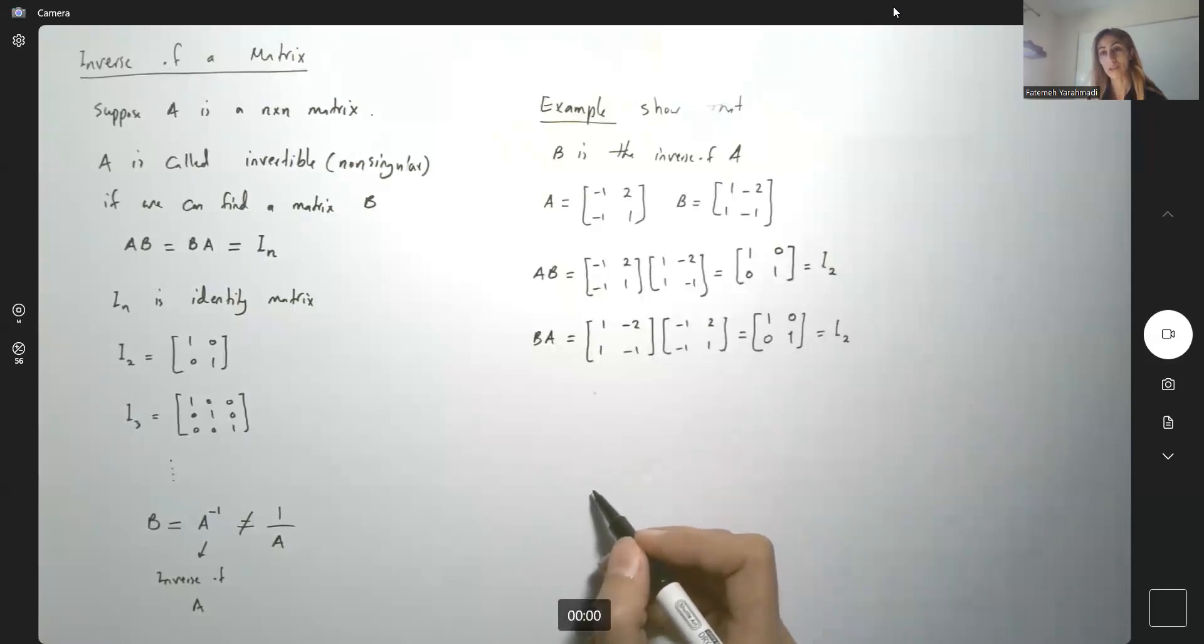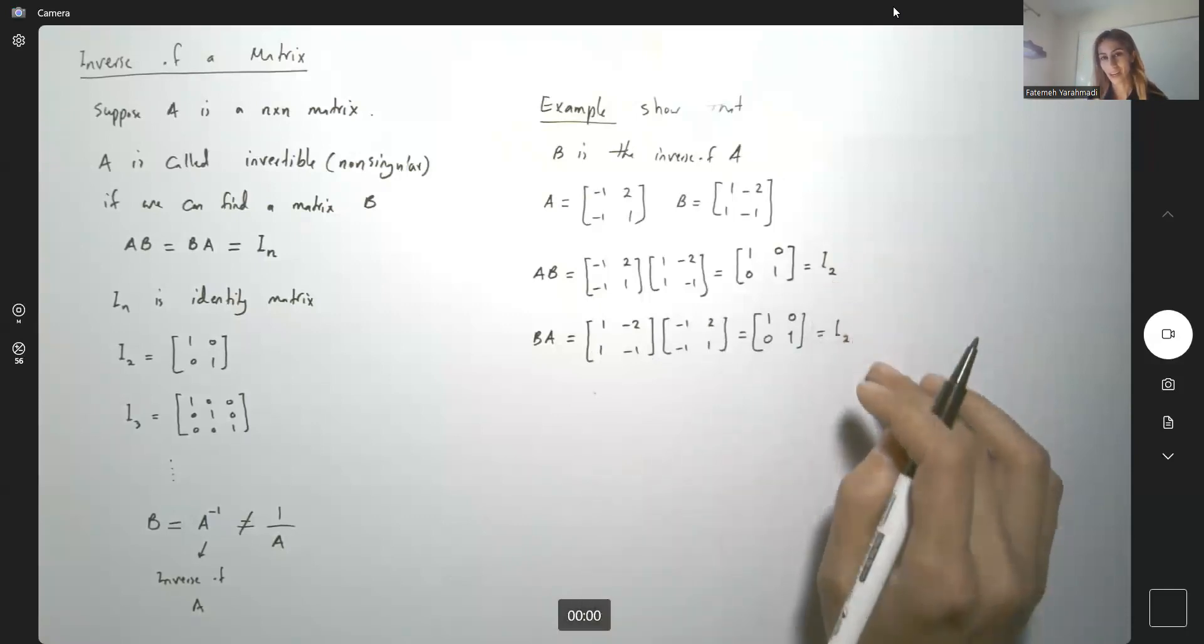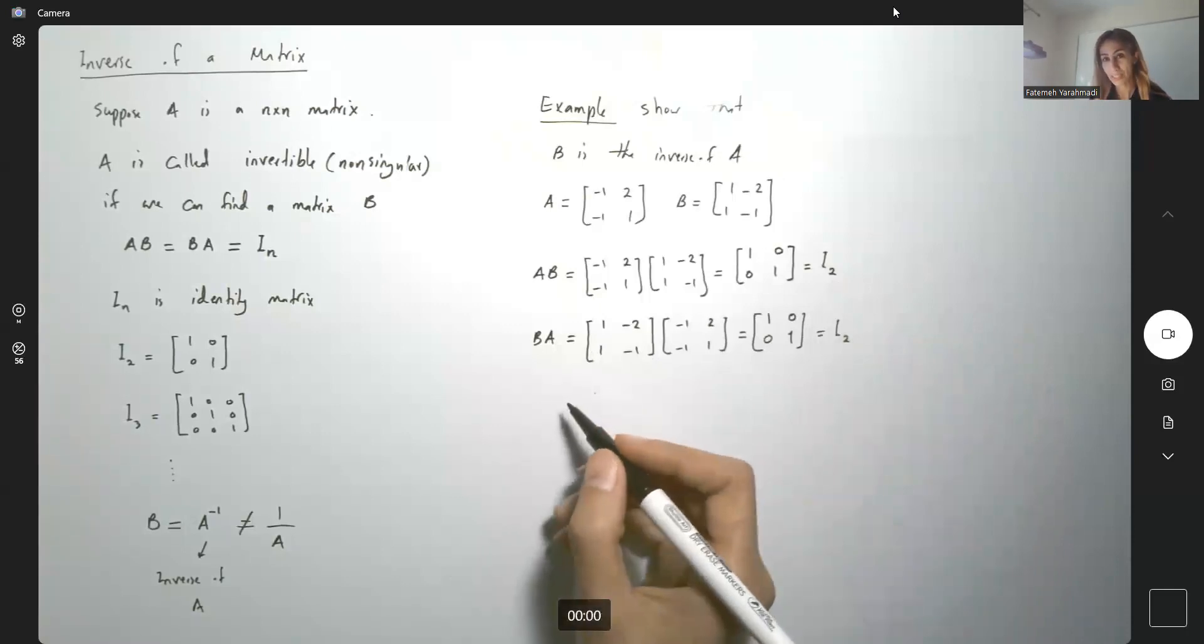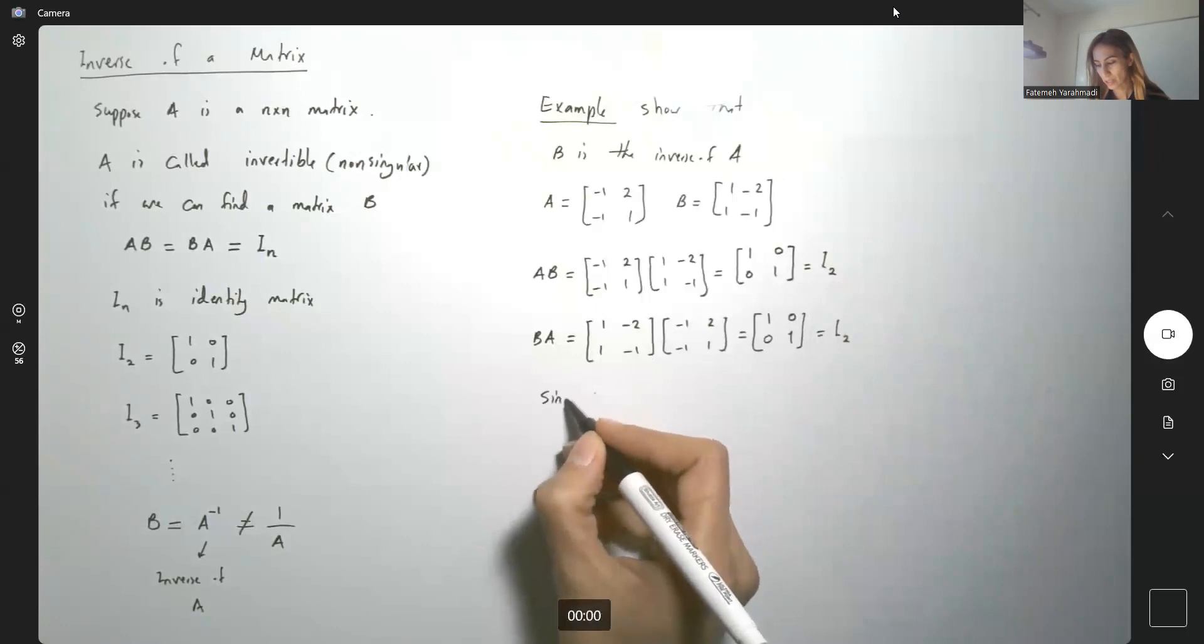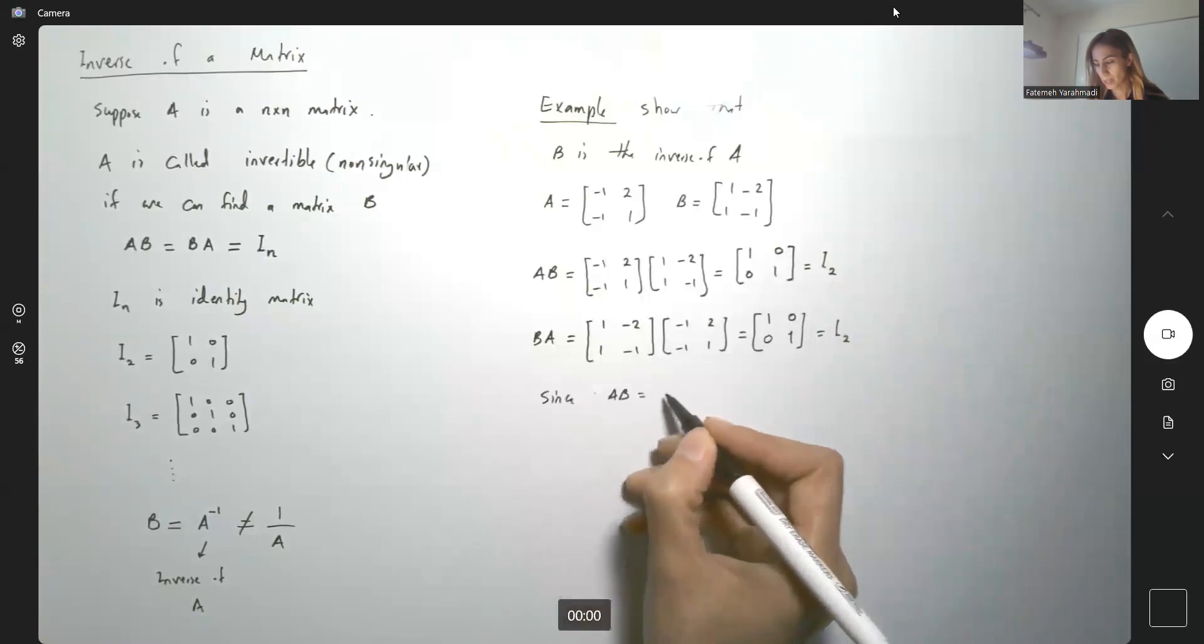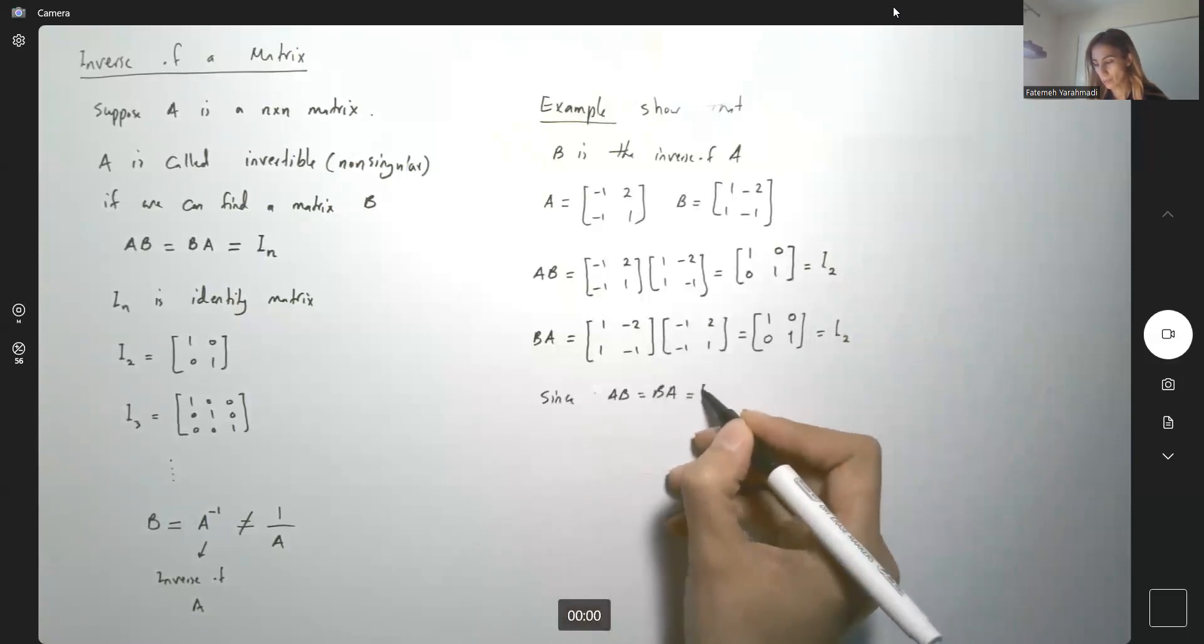So left multiplication, right multiplication gives us I2, or the identity matrix of size 2. So what's the meaning of that? Since AB is equal to BA equals to I2,